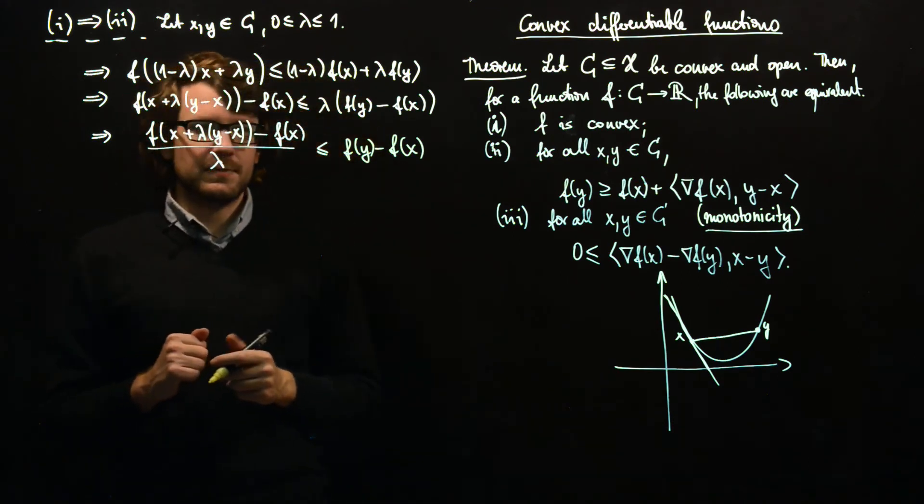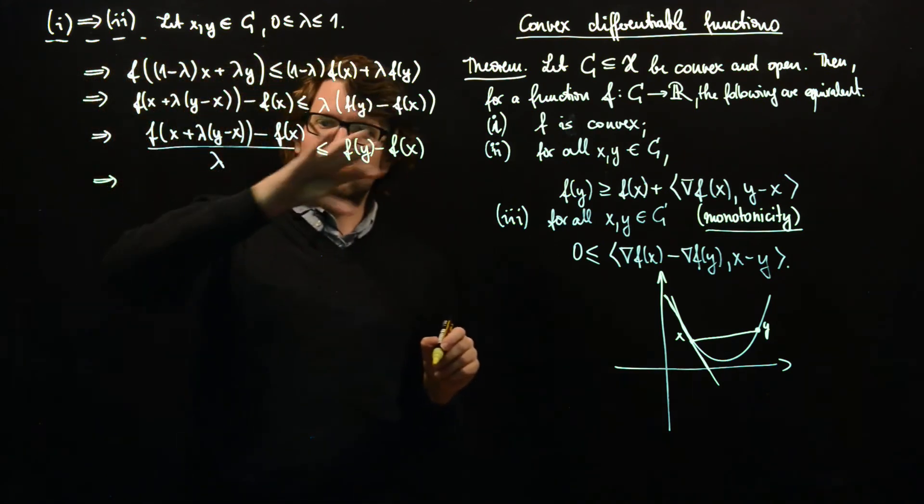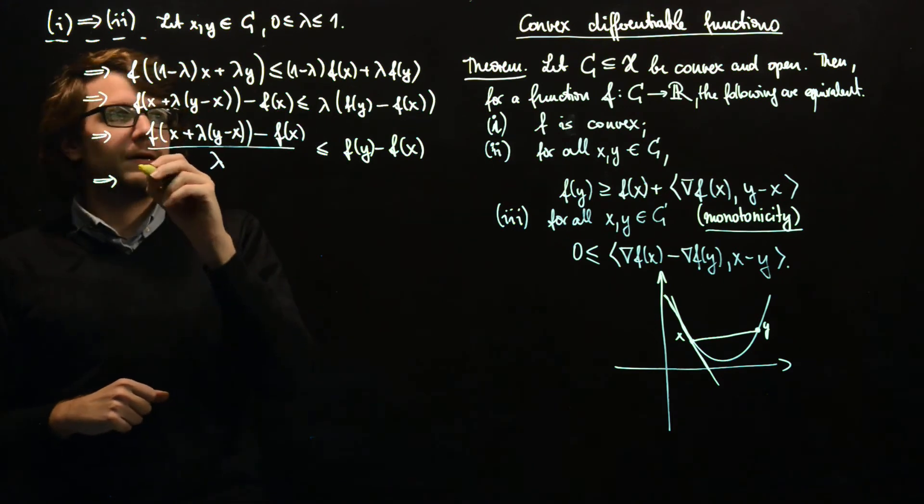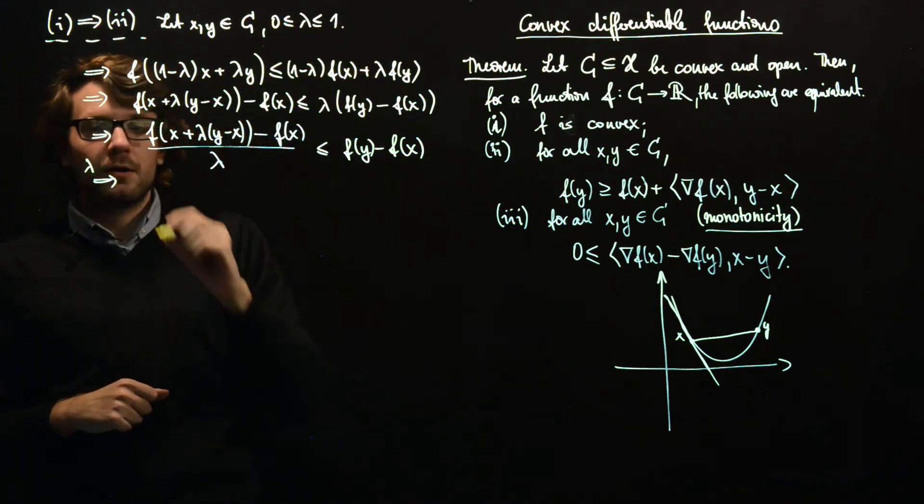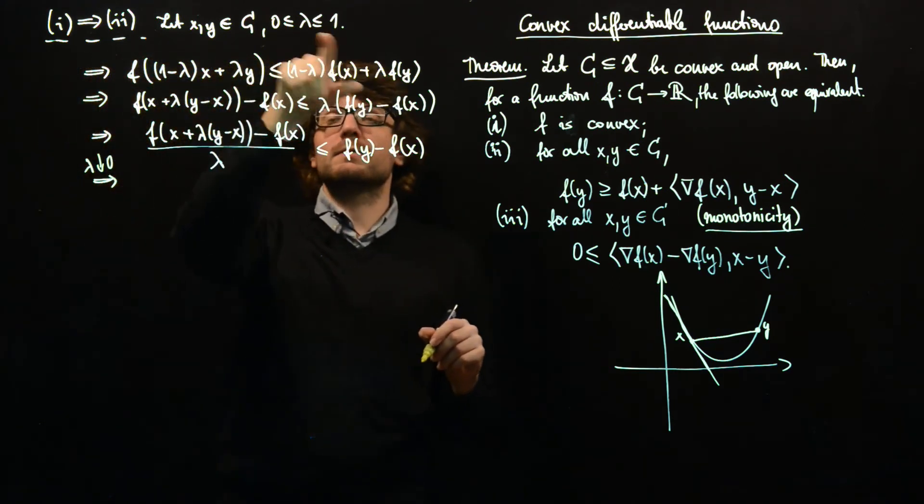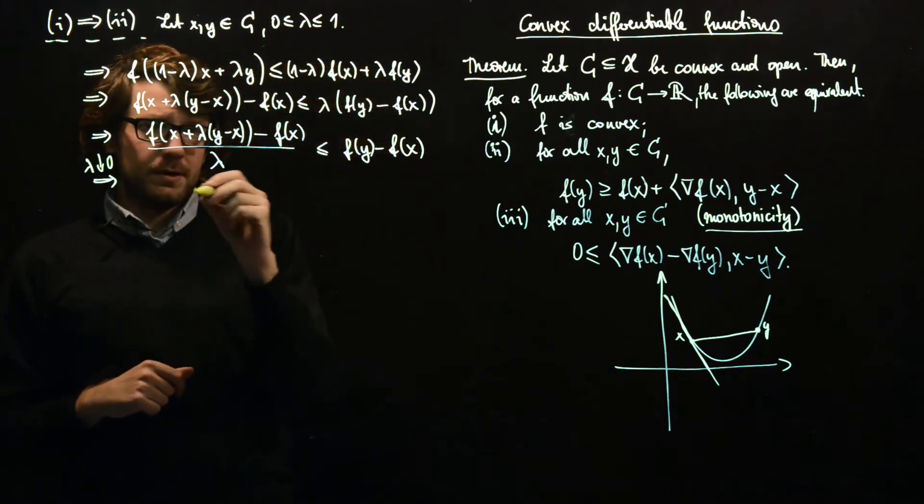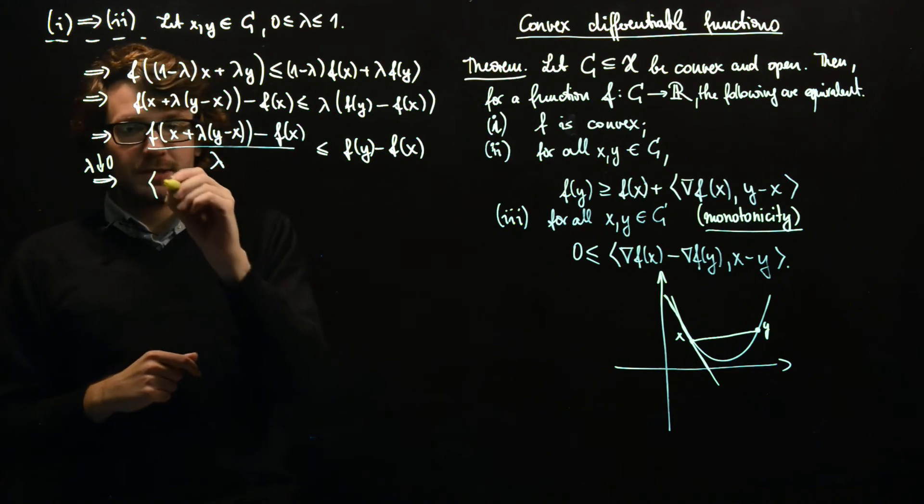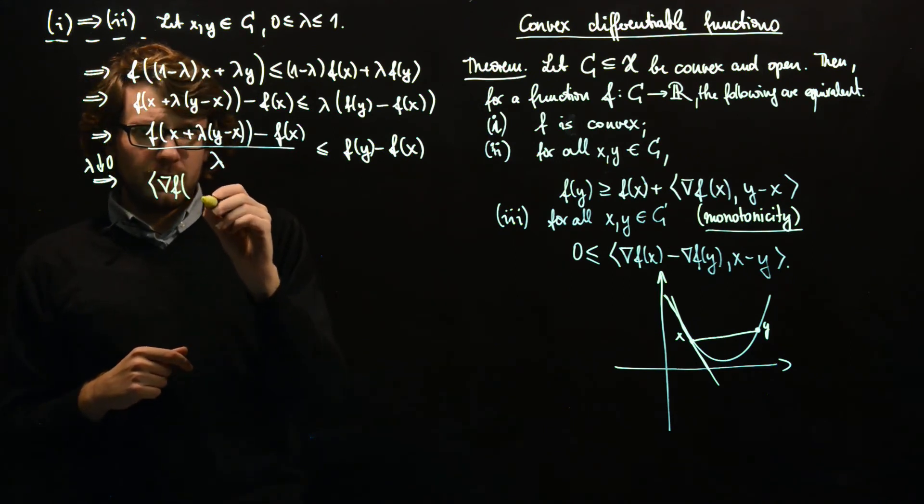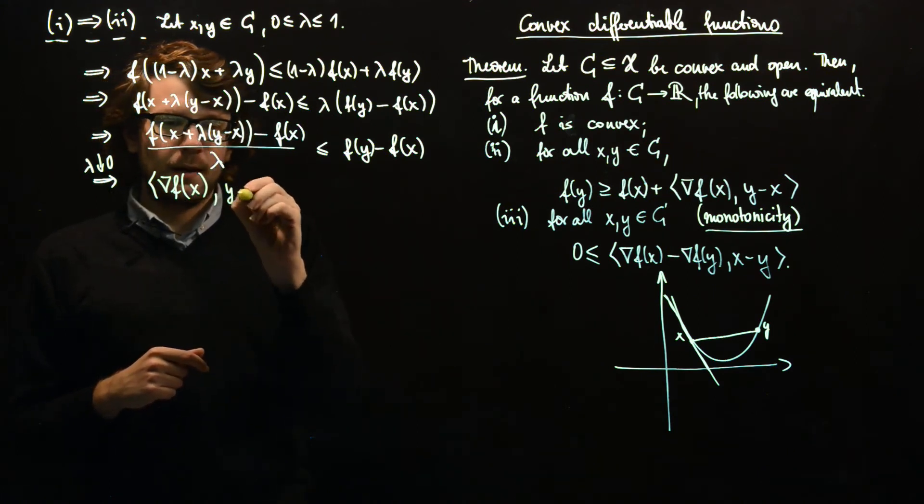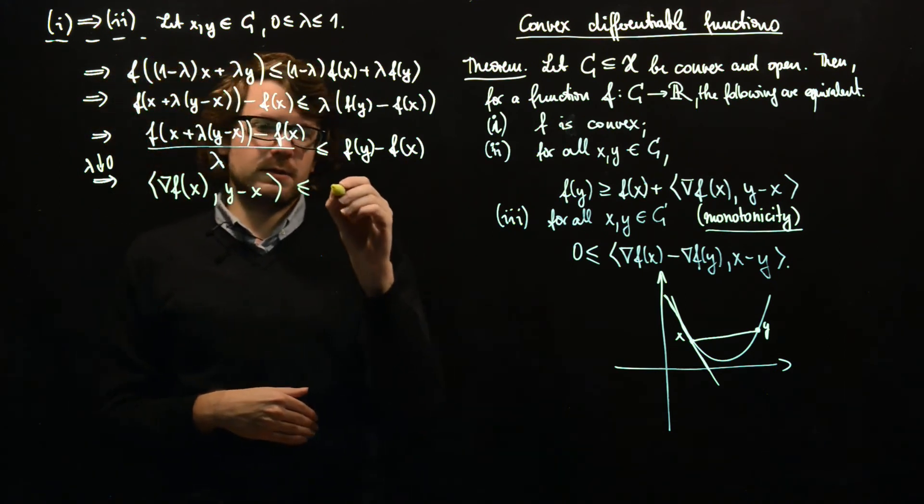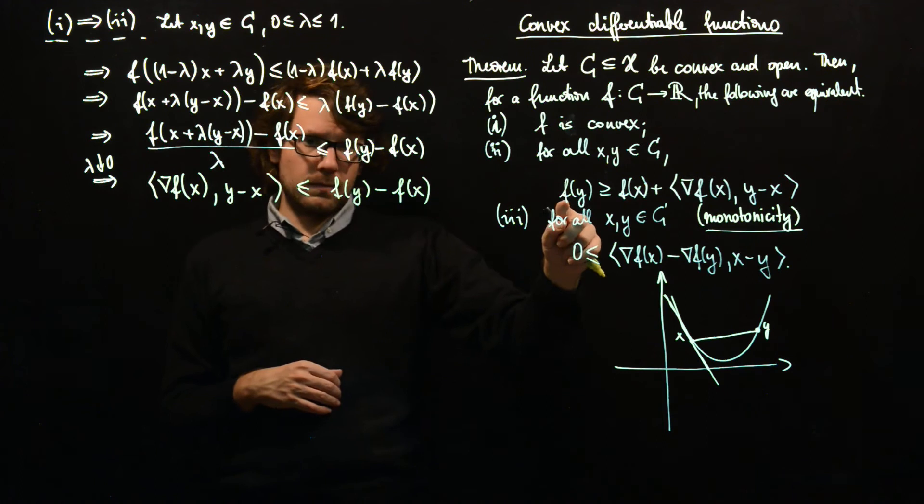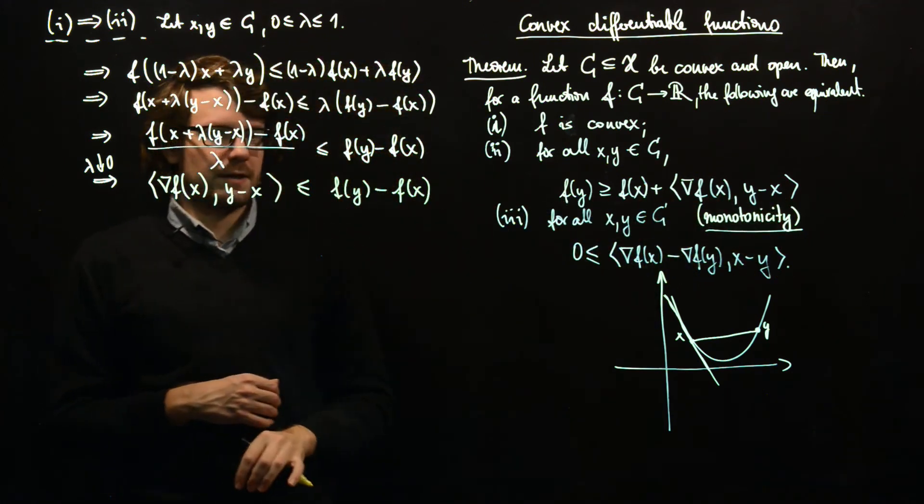What does that mean? Now we apparently don't have λ left here and here we have the difference quotient. This holds for all λ, so if we let λ go to 0 from above since we only have the interval between 0 and 1, then by the chain rule this is the derivative of this function with respect to λ. By the chain rule this is ∇F(X)·(Y - X) ≤ F(Y) - F(X). And I think we're done. That's exactly what we have to show if we move F(X) to the left hand side.